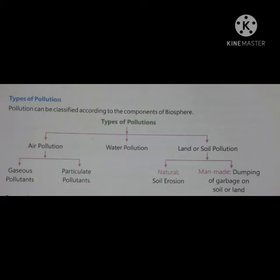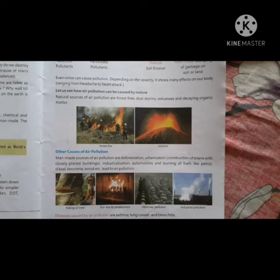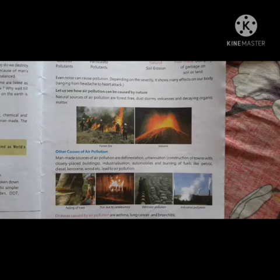Gaseous pollutants means different types of gases which get mixed up in the air, and particulate pollutants means dust particles or any other pollutants which are in the form of particles. Natural sources of air pollution are forest fires, dust storms, volcanoes, and decaying organic matter.